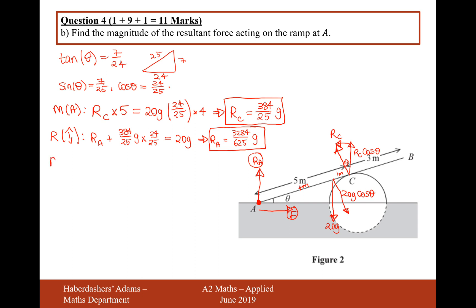Now let's resolve horizontally. We have this force here which is going to be RC sine theta, and that balances out with F. So F equals RC, which is 384 over 25 times G, multiplied by sine alpha, which is 7 over 25. That gives us 2688 over 625 times G.